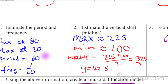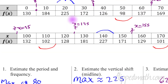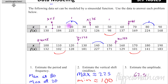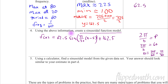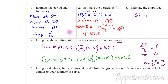Pause the video and try to write a cosine function for the same data set. Hint: cosine starts at the maximum, so the phase shift to the right would be 20 units. The answer is: 62.5 · cos(π/30 · (x − 20)) + 162.5. The period and amplitude stay the same; only the phase shift and function type change.